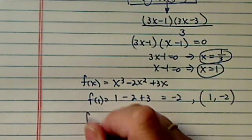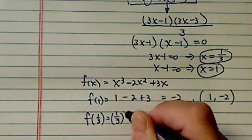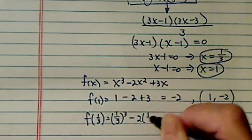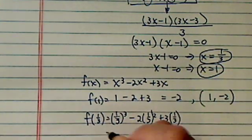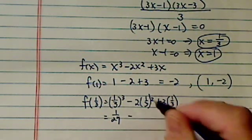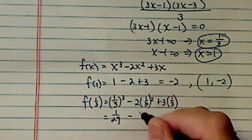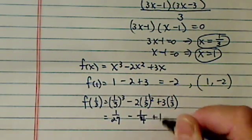For the second point, I have f(1/3). This is a little tedious: 1/3 cubed minus 2 times 1/3 squared plus 3 times 1/3. This is 1/27 minus 1/4 plus 1.